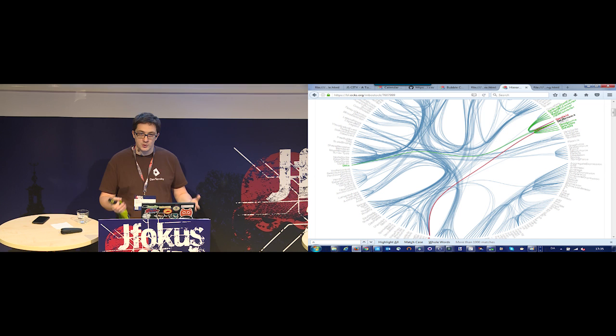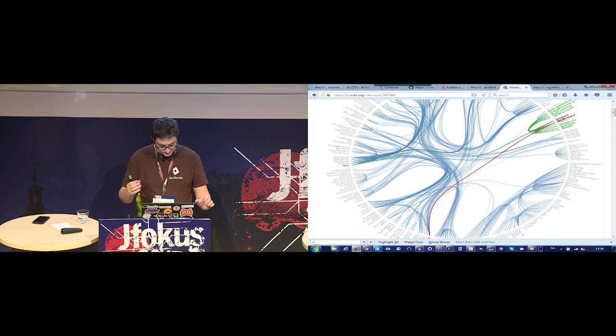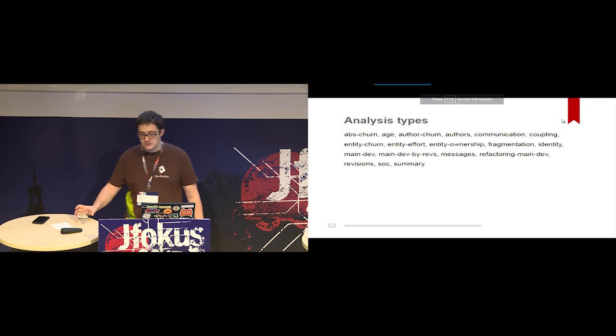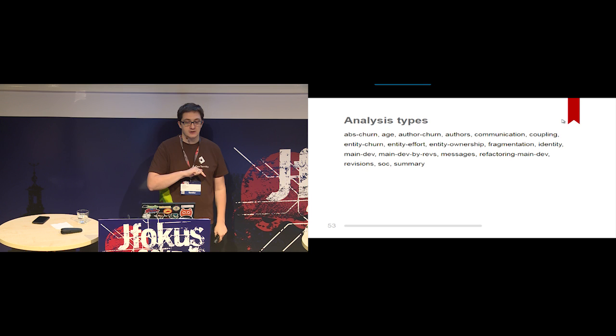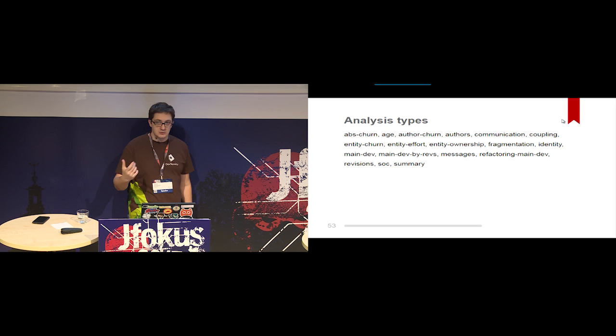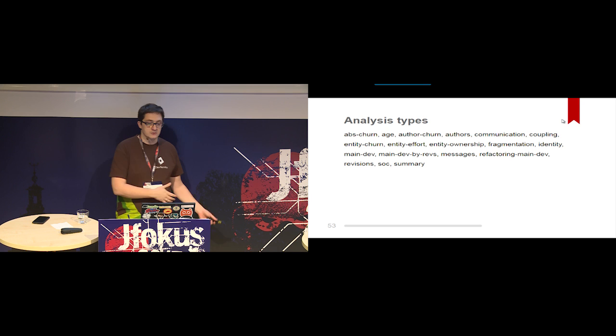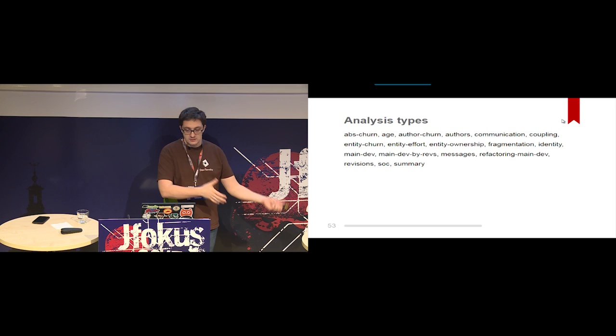CodeMaat has different types of analysis: how many changes were made, the age of a file, who is the original author, and who is the actual maintainer — information only extractable from version control history. We need to combine data from version control history with static analysis tools together to get actually valuable knowledge about the code base.